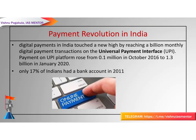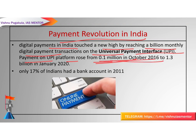Payment revolution in India is a recent topic seen in the news. Digital payments in India touched a new high by reaching one billion monthly digital payment transactions on the UPI platform. UPI payment transactions rose from 0.1 million in October 2016 to 1.3 billion in January 2020. This is based on an article from the Indian Express. Due to COVID, online digital payment transactions have increased even more.